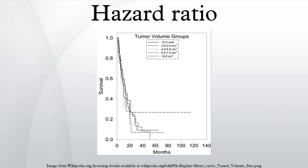In survival analysis, the hazard ratio is the ratio of the hazard rates corresponding to the conditions described by two levels of an explanatory variable. For example, in a drug study, the treated population may die at twice the rate per unit time as the control population. The hazard ratio would be two, indicating higher hazard of death from the treatment.